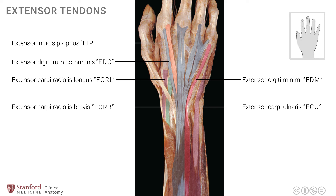All of these tendons are kept in place by a fibrous membrane known as the extensor retinaculum, which is removed in this diagram. The extensor retinaculum is located over the dorsum of the wrist joint.